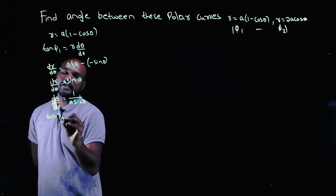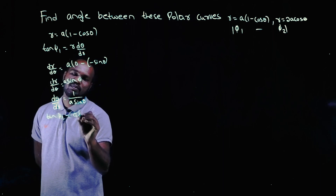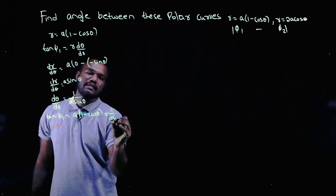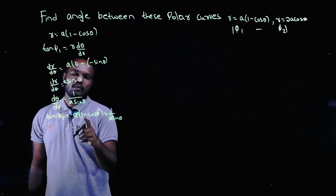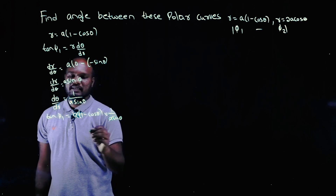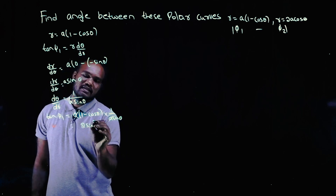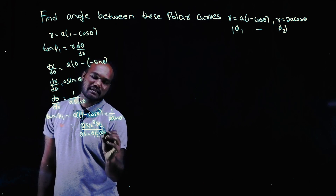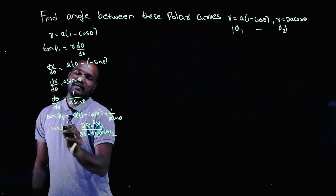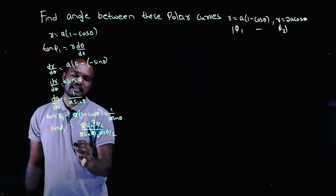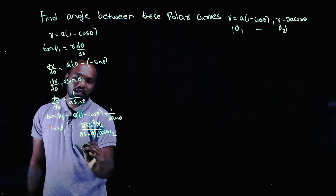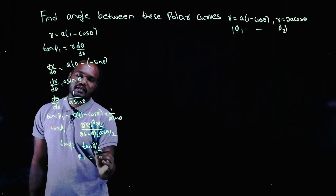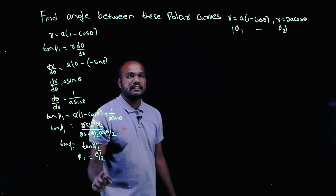Substituting into the formula: tan φ₁ = r · dθ/dr = a(1 - cosθ) · 1/(a sinθ). The a's cancel, giving (1 - cosθ)/sinθ. Now, 1 - cosθ = 2sin²(θ/2) and sinθ = 2sin(θ/2)cos(θ/2). The 2's and sin(θ/2) cancel, leaving tan(θ/2). So tan φ₁ = tan(θ/2), which means φ₁ = θ/2.